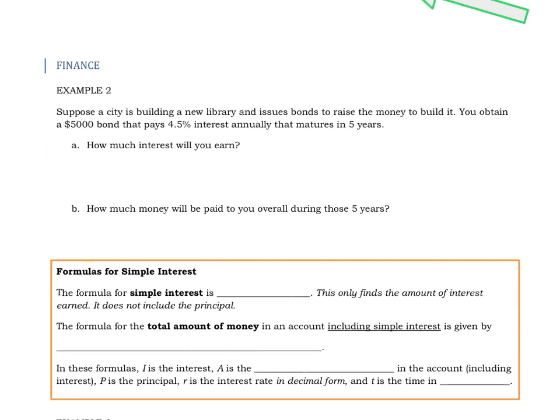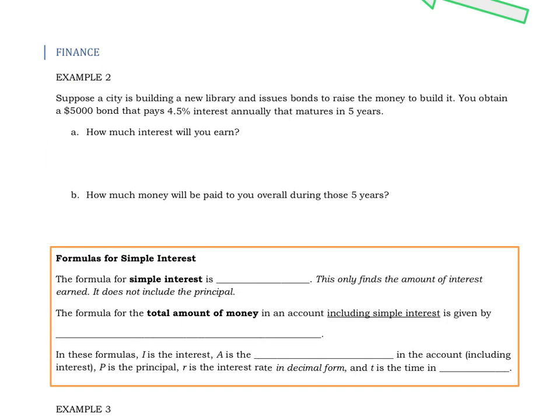So let's take an example of how that would work. A city is building a new library and they issue bonds to raise the money to build it. You get a $5,000 bond that pays 4.5% interest annually that matures in five years. So how much interest will you earn?